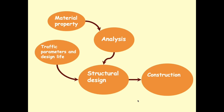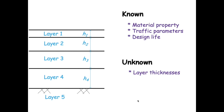Sometimes the pavement is already built. On an existing pavement, if we want to do a rehabilitation, we need to evaluate the existing strength of the pavement. This information is fed to the analysis scheme and used for structural design. Essentially, we have certain known parameters like material property, traffic parameters, and design life, and the thickness values of the individual layers — H1, H2, H3, H4 — are our unknowns.